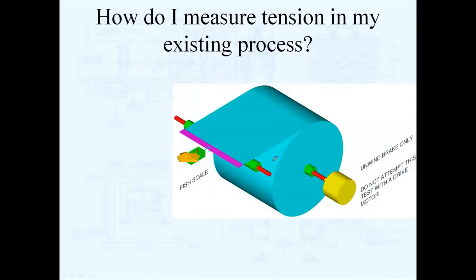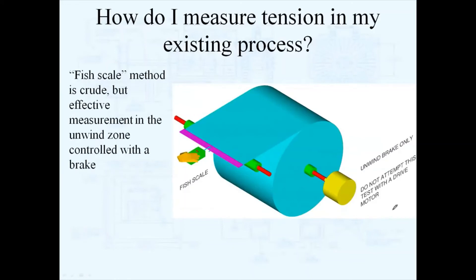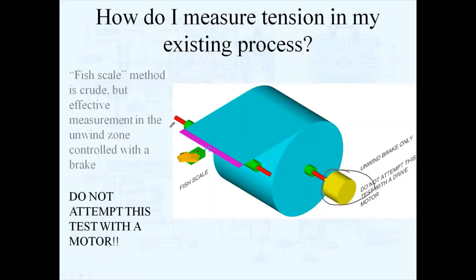A very good way of measuring tension at the unwind is what I call the fish scale method. If you have a brake, do not attempt this if there's a motor or if this is a driven unwind. But if you have a brake or an air brake, magnetic particle brake, you have to have a way to clamp the edge of your material across its width.